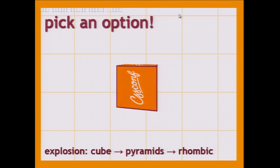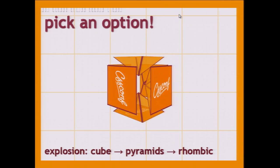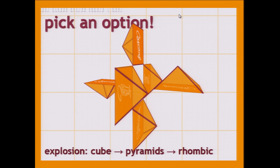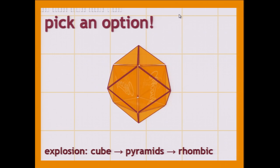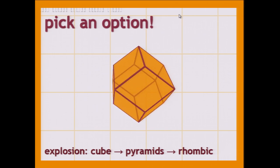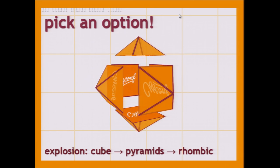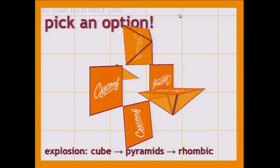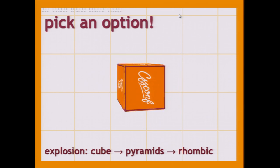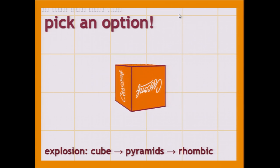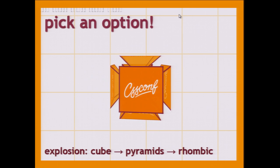It starts something like this — it's a cube, and then this cube explodes into pyramids, and these pyramids move a bit, and then they recombine into a shape which is called a rhombic dodecahedron, and it has 12 faces. Each face is a rhombus, and then it basically goes back to what it was before.